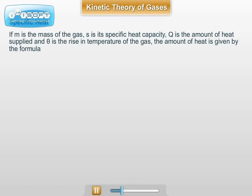If M is the mass of the gas, S is the specific heat capacity, Q is the amount of heat supplied, and theta is the rise in temperature of the gas, then the amount of heat is given by the formula Q equals M S theta, or specific heat is given by the formula S equals Q upon M theta.